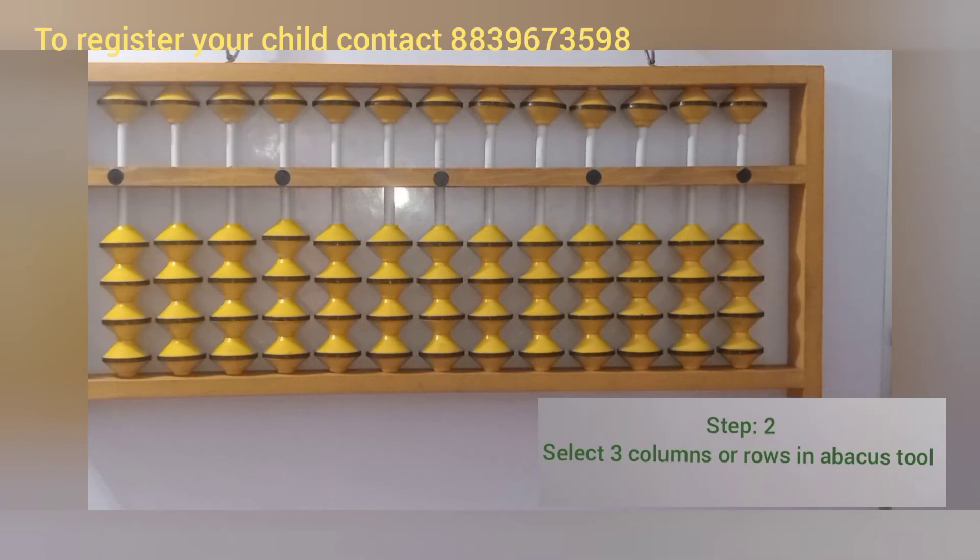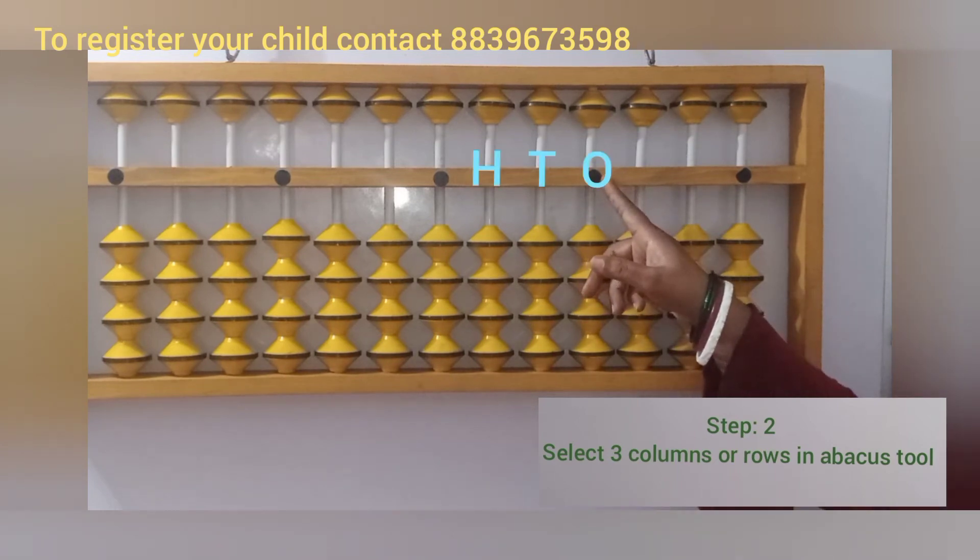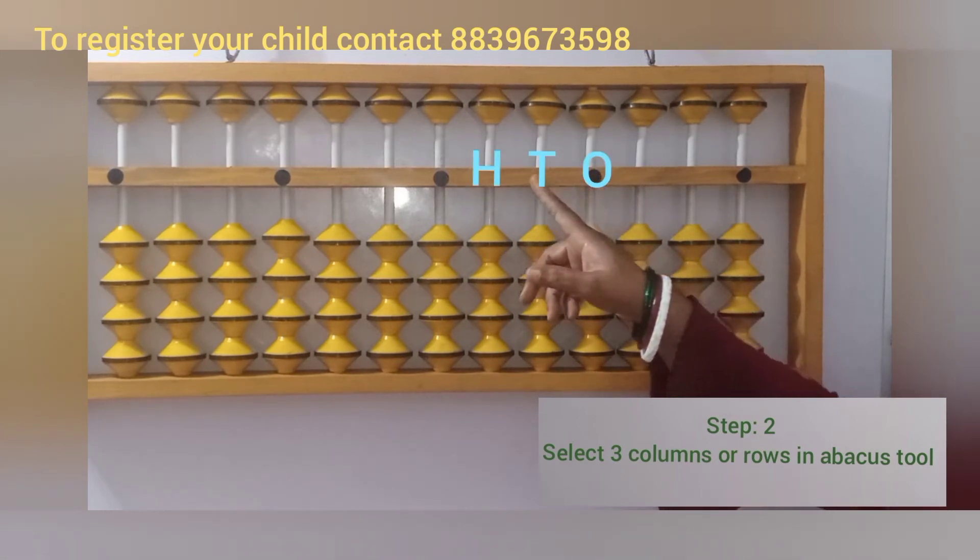Second step is to select the columns. Here you can see there are 3 digits, so we will select 3 columns. That is 1, 10, and 100.